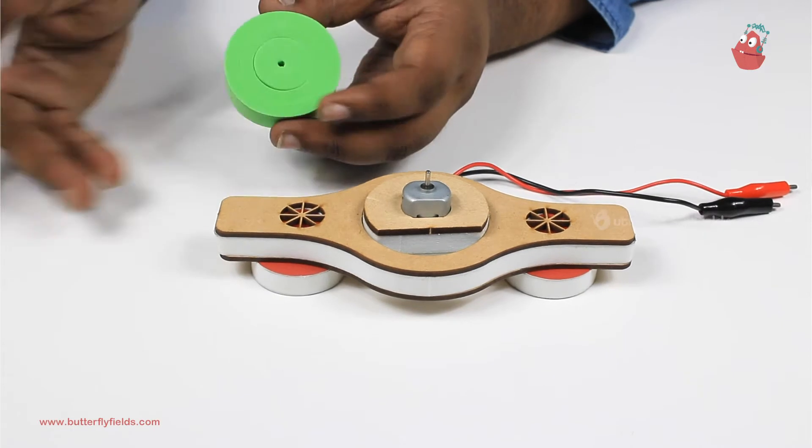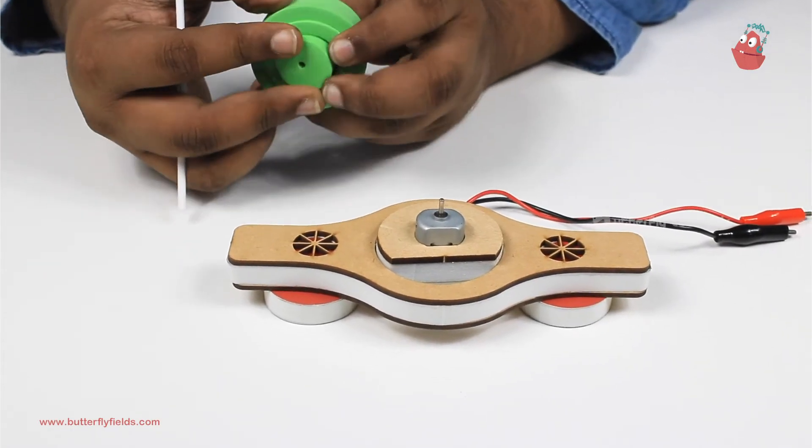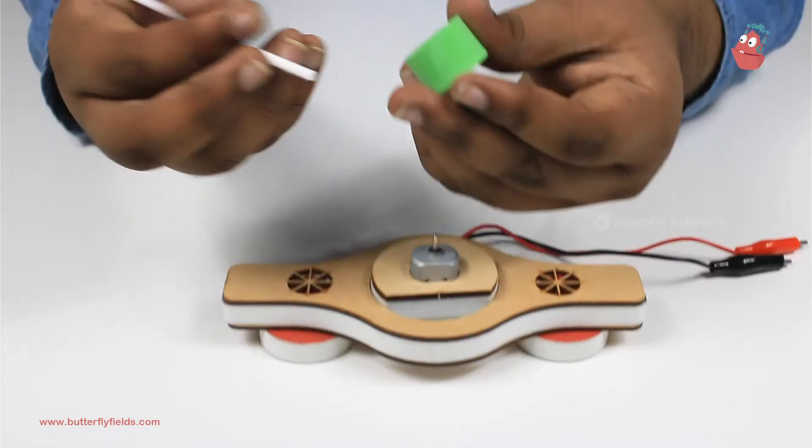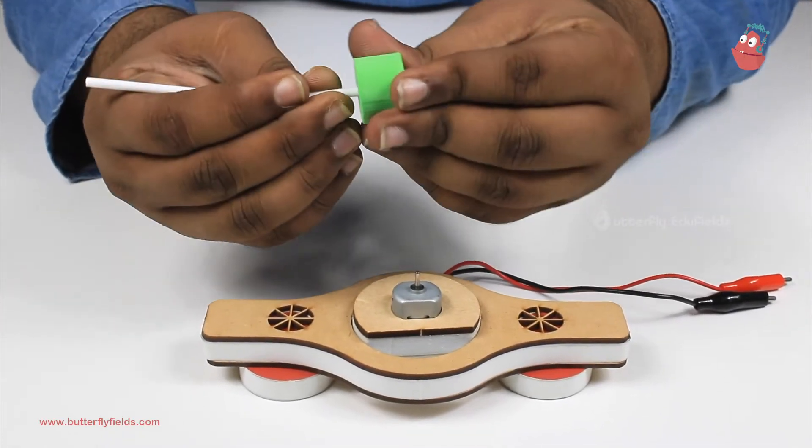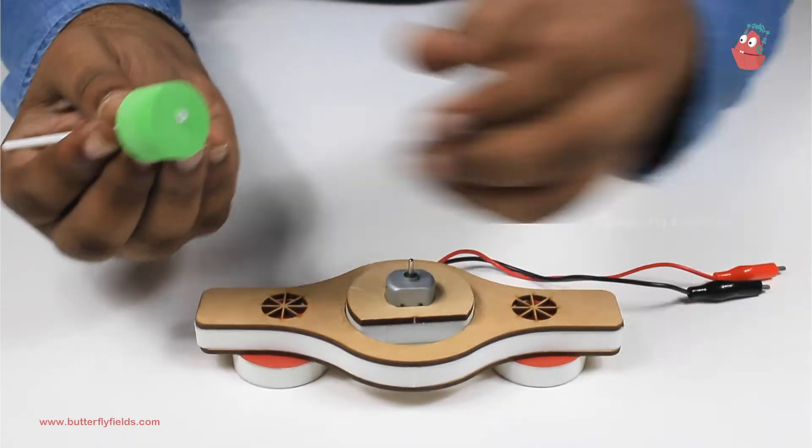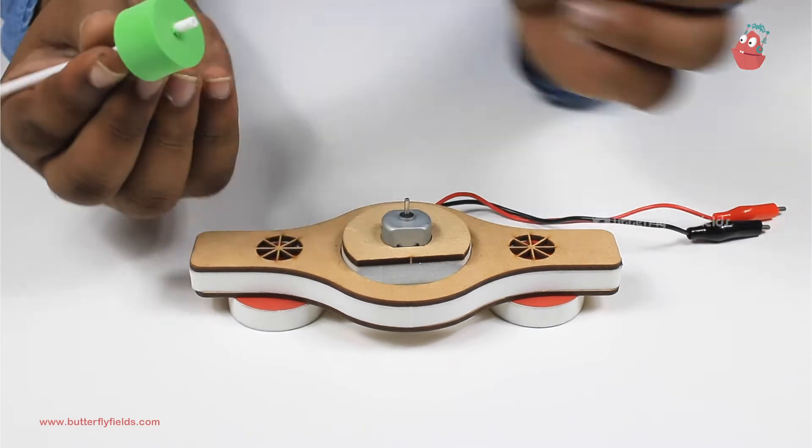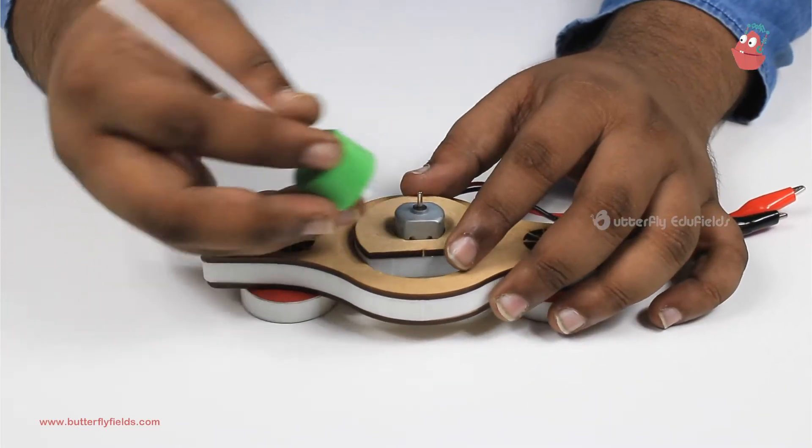Now from the focus bit, we will remove the centermost part and fix it onto the straw. The straw has to come out on the other side a little bit, and then fix this on the motor.